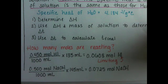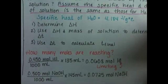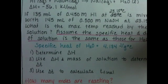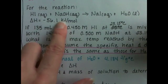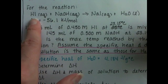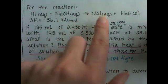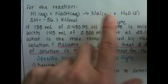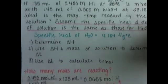We don't need to figure out how much product we're making because our ΔH that we have for the reaction, it is negative 56.1 kJ for every 1 mole of HI that reacted or every 1 mole of sodium hydroxide that reacted or 1 mole of sodium iodide produced or 1 mole of H2O produced.